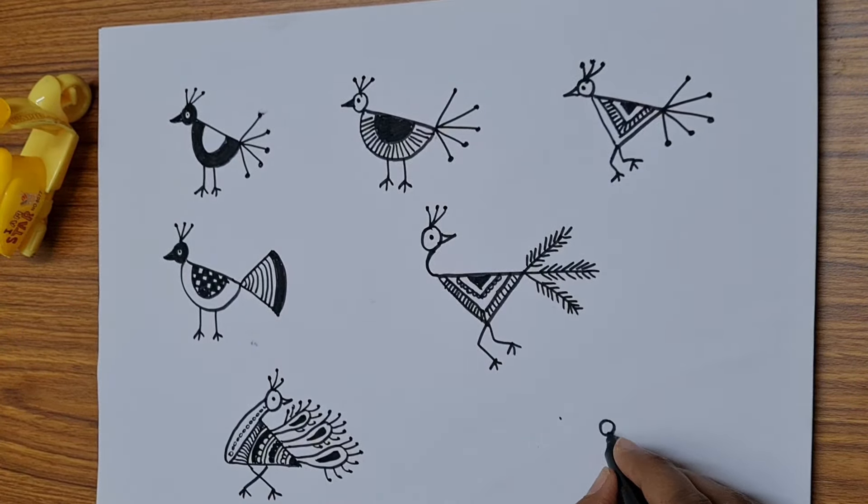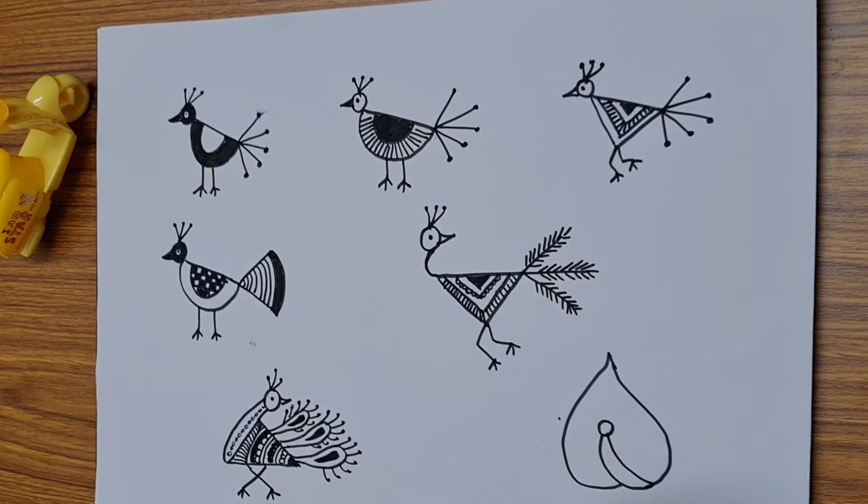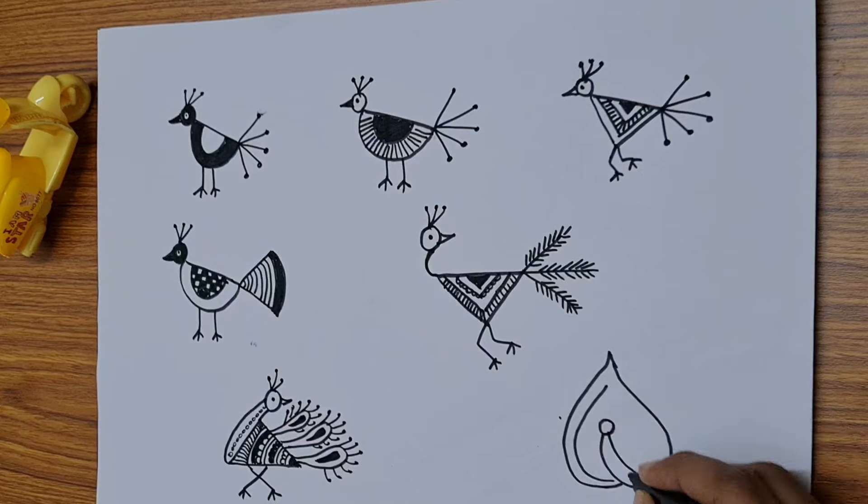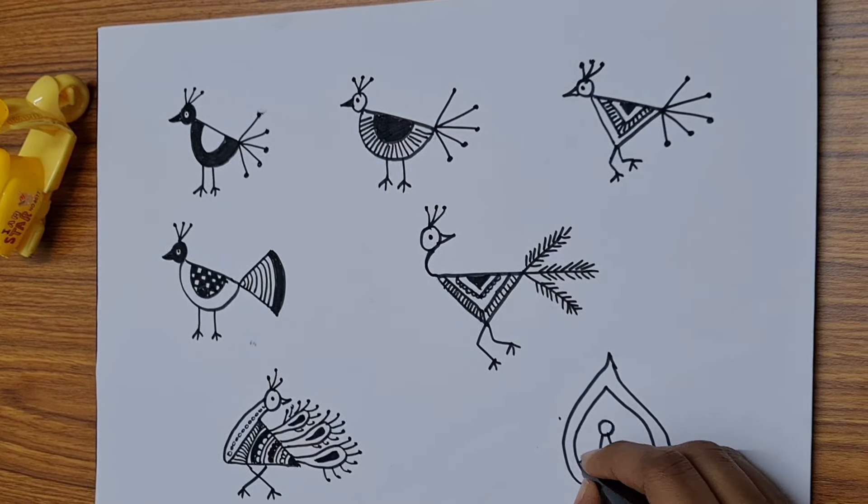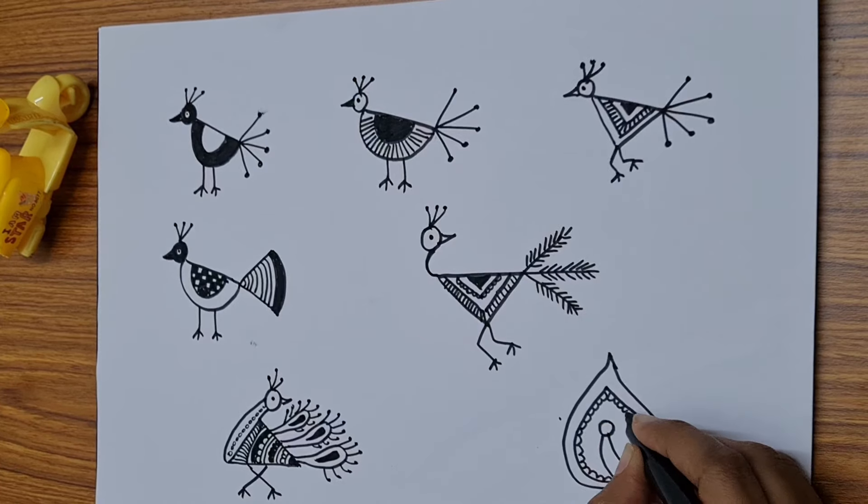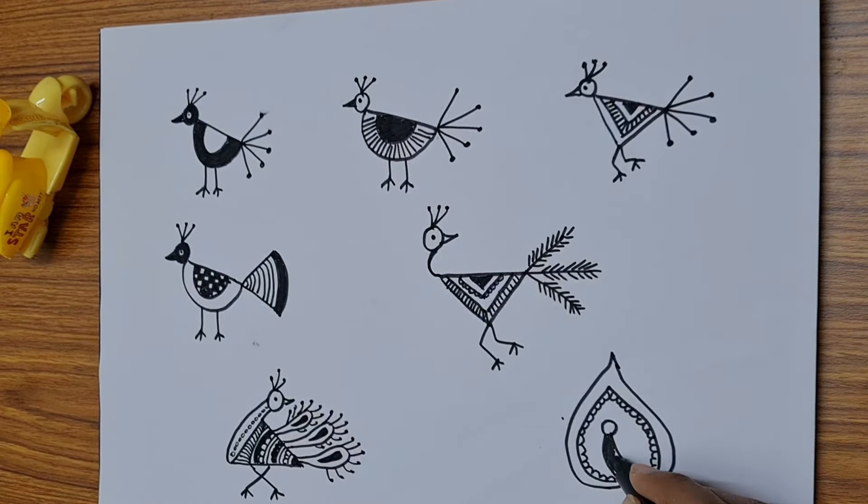The legs can be crossed so it will look like a dancing peacock. And this peacock is the one that looks like it has opened its feathers for dancing. So this one will also need a practice a little bit.